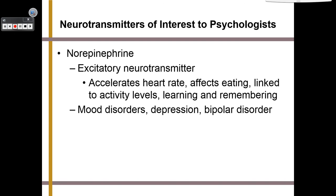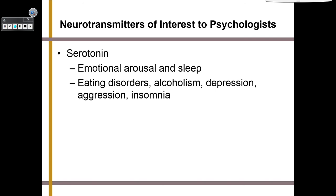Serotonin is linked to emotional arousal and sleep, and is related to eating disorders, alcoholism, depression, aggression, and insomnia. We need all of these neurotransmitters — our brain normally provides them naturally. But sometimes it makes too many or not enough, which is why we take medication in order to balance ourselves back out.